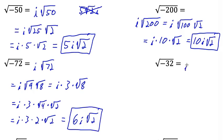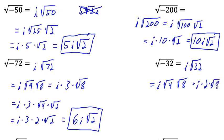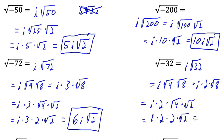How about this one? This equals i times the square root of 32, because i equals the square root of negative 1. We break down 32 — I'm going to start with 4 times 8. So i times the square root of 4 times the square root of 8. The square root of 4 equals 2, so this is i times 2 times the square root of 8. But 8 can be broken down further, because 4 times 2 equals 8 and 4 is a perfect square root. So we have i times 2 times the square root of 4 times the square root of 2. The square root of 4 equals 2, so i times 2 times 2 times the square root of 2. 2 times 2 is 4, so we have 4i times the square root of 2.